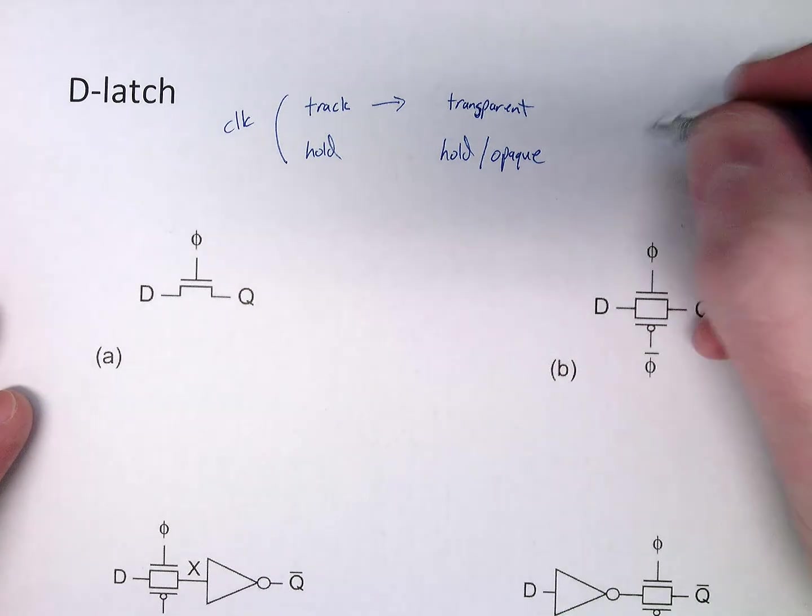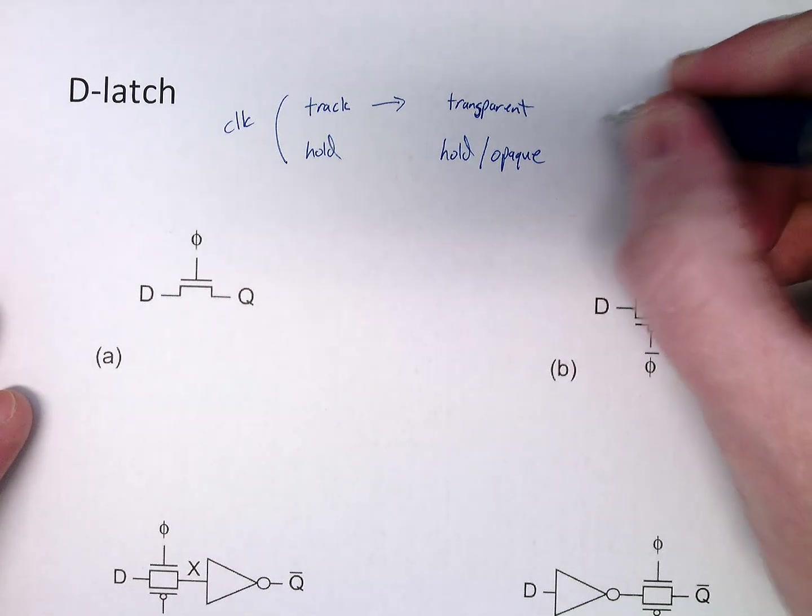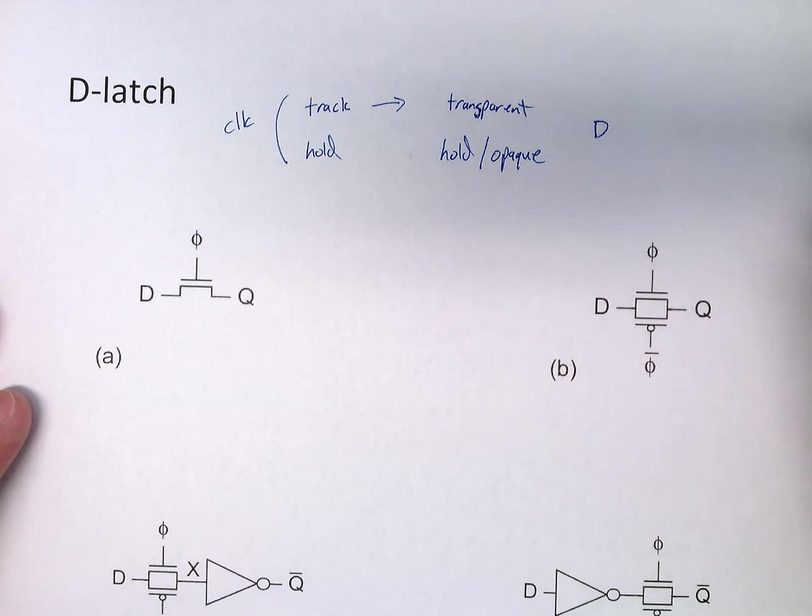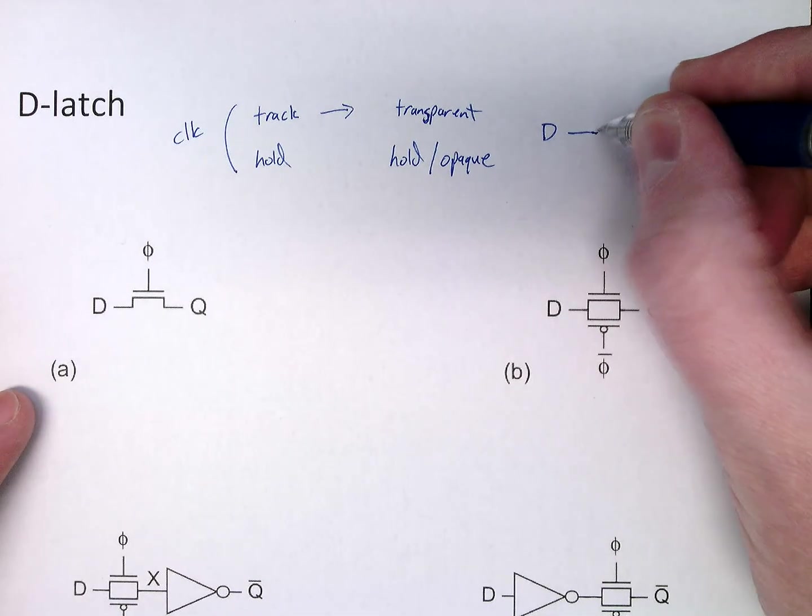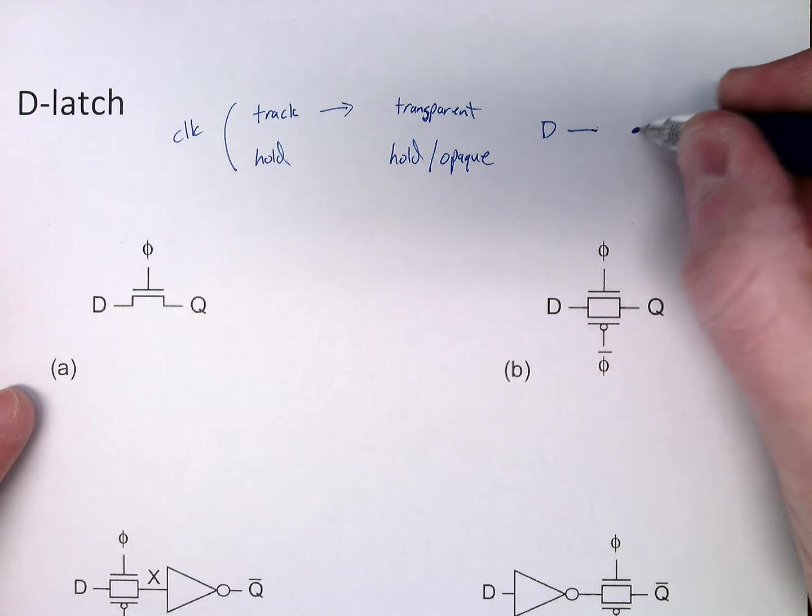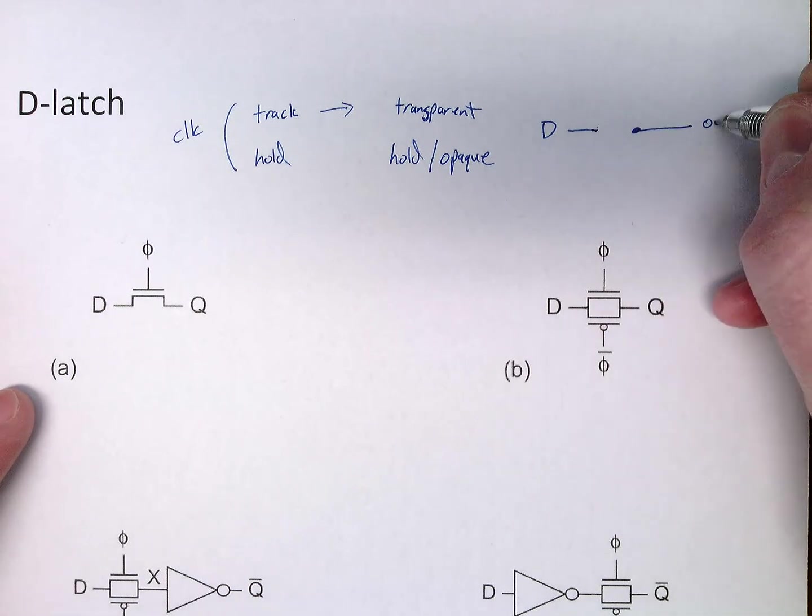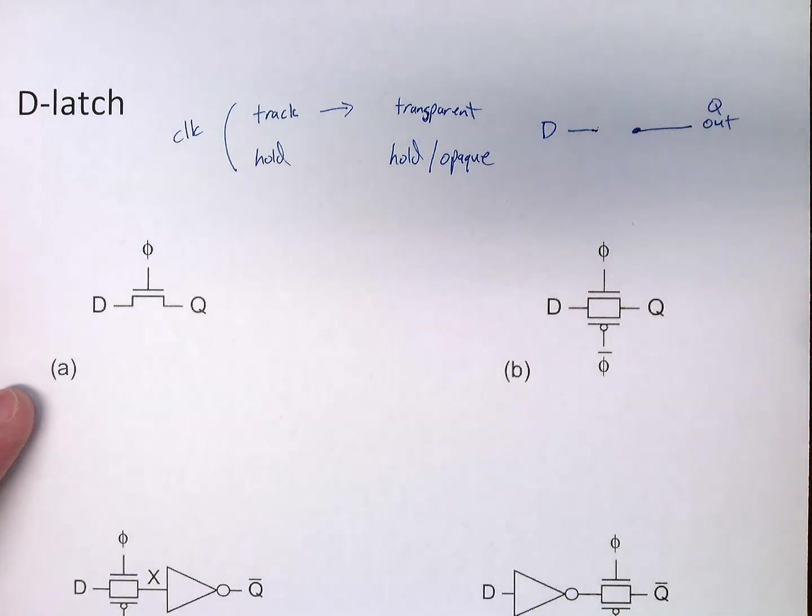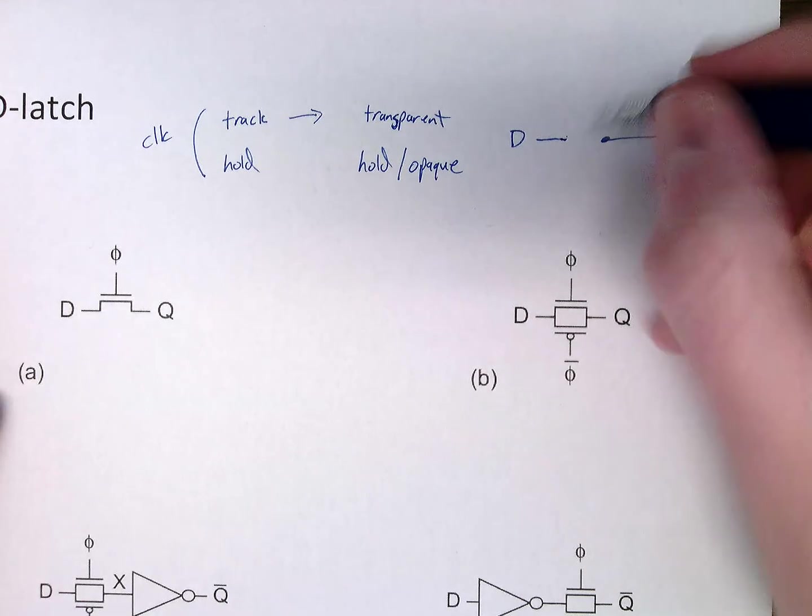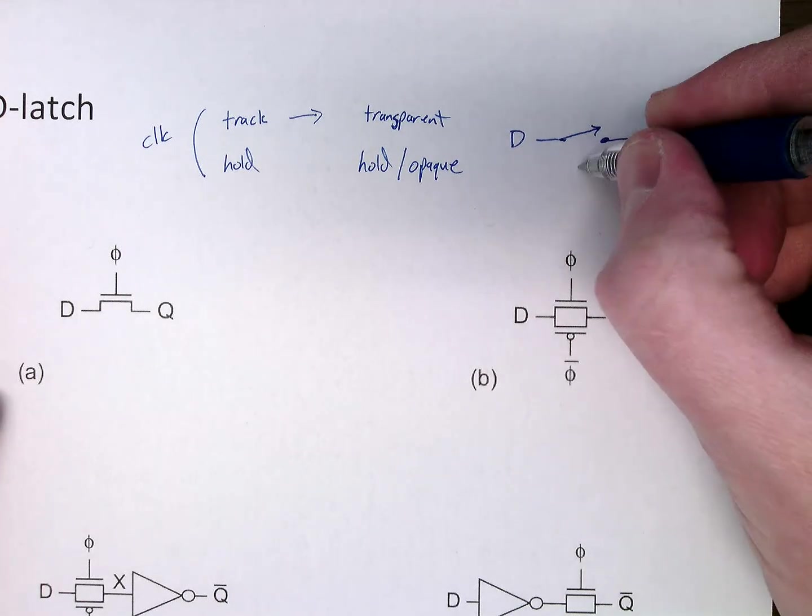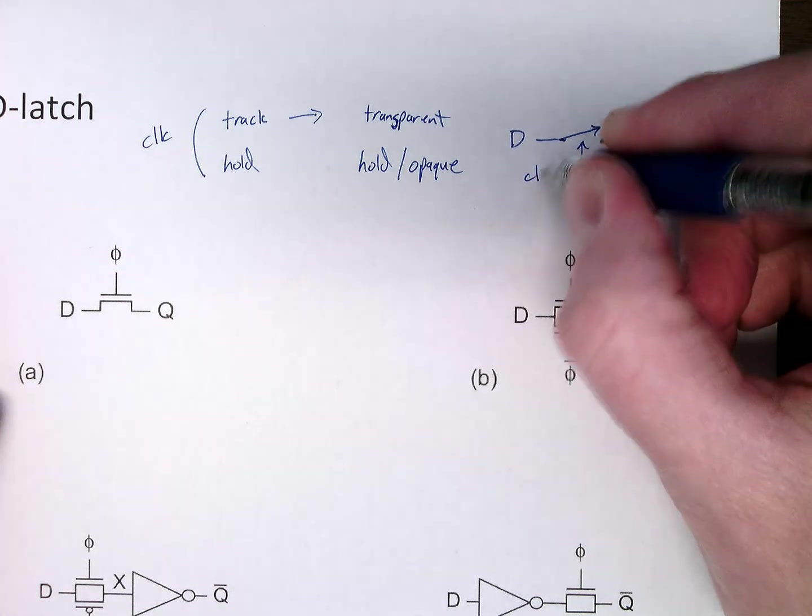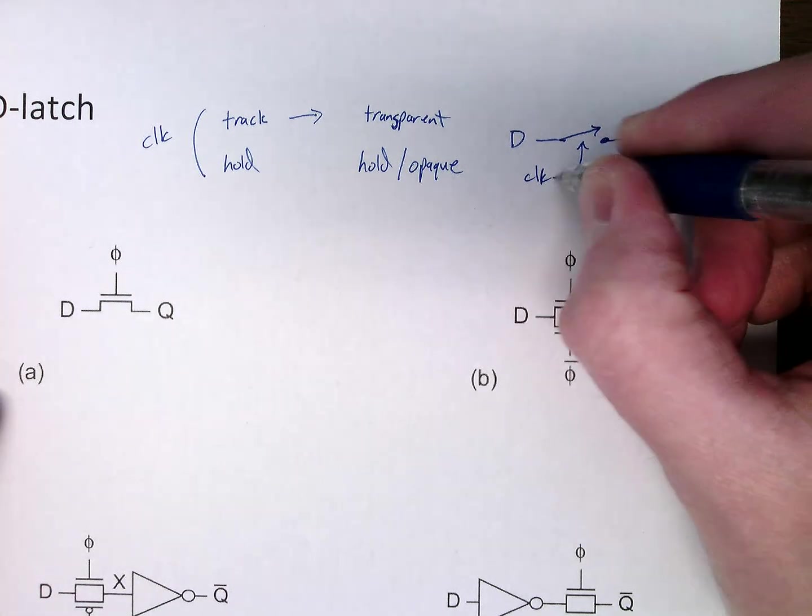You could model this really as a switch. You could say, I'll use D since we're using D. We have D. In track mode, we just have a wire, okay. Or a Q. We just have a wire, and we have a switch. So we say, clock here.